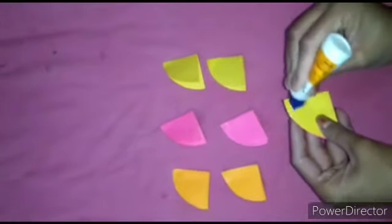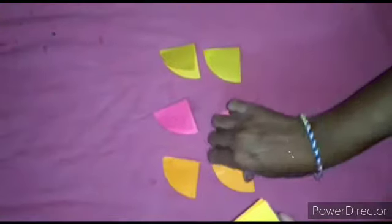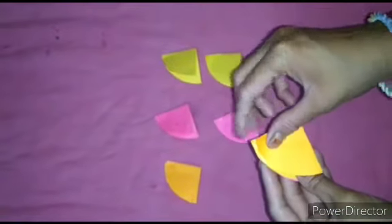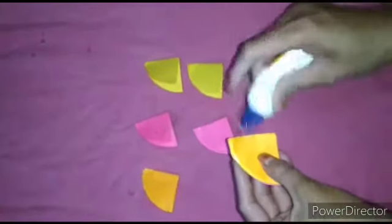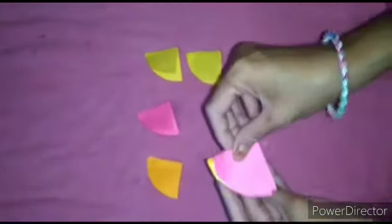Again apply glue over here and take this orange paper. You can take any color. Like this, stick all your origami papers. So students, see our sticking is ready. See like this.